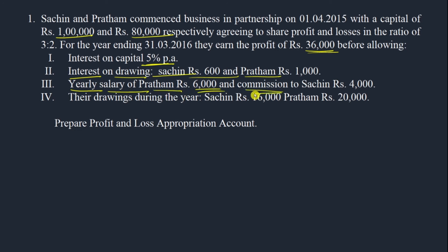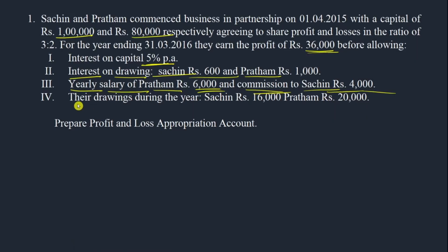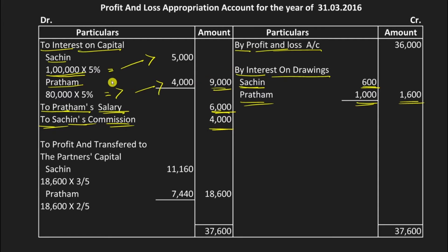Next, Pratham's yearly salary of 6,000 rupees and Sachin's commission of 4,000 rupees are both entered on the debit side. Salary is an expense for the firm, and commission is also an expense for the firm. Note: the drawings figures of 16,000 and 20,000 should not be entered — we only consider interest on drawings, not the drawings themselves.